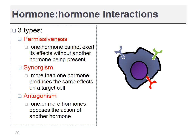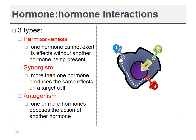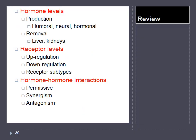We must also consider the effect that a second hormone may have on the first. Here are three basic patterns: sometimes a hormone will have no effect unless a second one allows it — that's a permissive relationship. Sometimes two hormones work together synergistically, where much lower doses of both lead to a greater effect than a large dose of just one. And lastly, we'll see a number of hormones that antagonize one another — we've already seen an example with PTH and calcitonin.